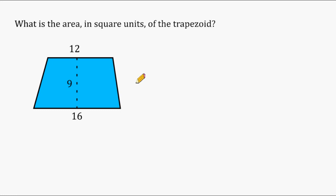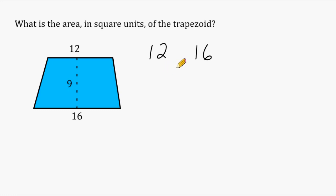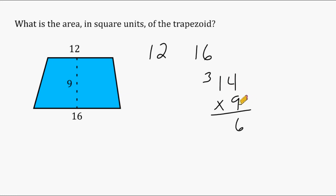For this problem we have to find the area of a trapezoid. For some trapezoids you can use mental math. First, identify the two bases: this base is 16 and this base is 12. Find the number right in the middle of those two values, which is 14, then multiply that by the height of 9. So the area is 14 times 9, which is 126 square units.